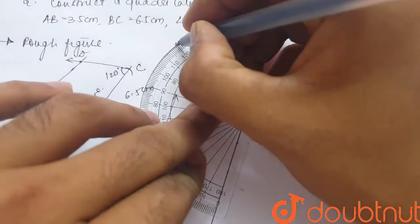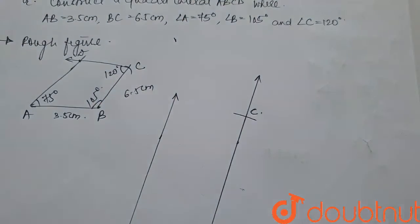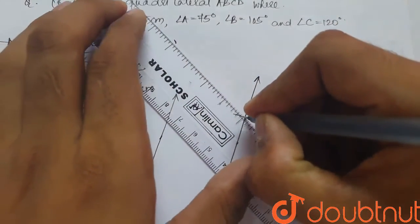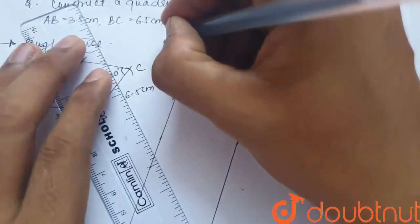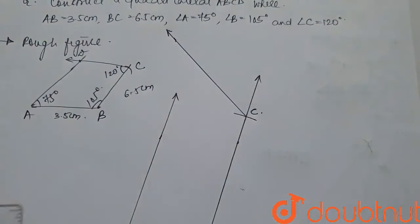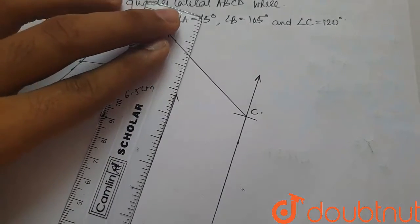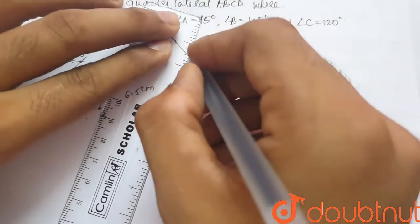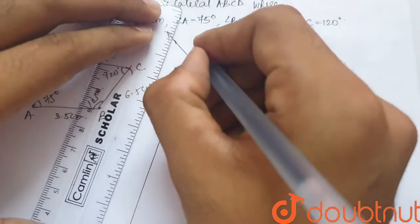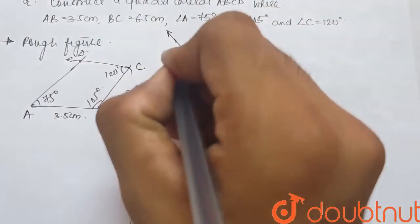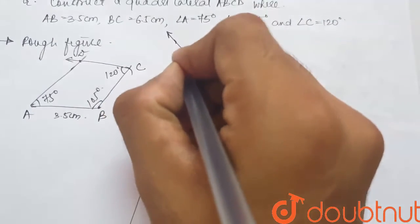So, we'll connect point C with this point to get the 120 degree line. What we will also have to do is extend this line so that it intersects the line from C and we get our point D.